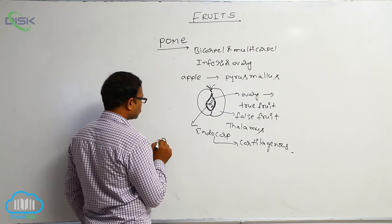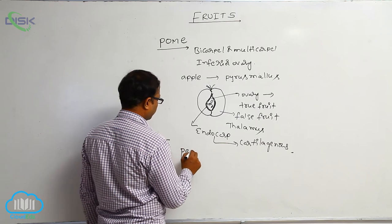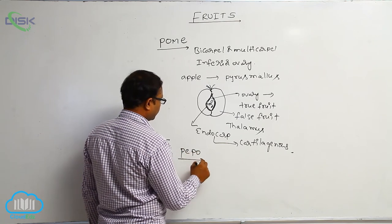After that pome, the last one is known as Pepo. Pepo means, for example, all gourds.